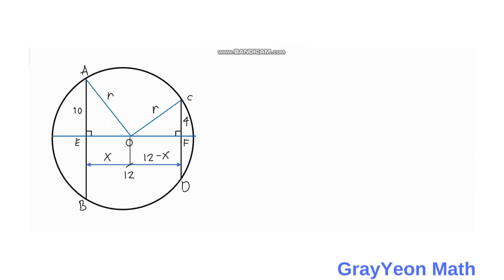The next thing that we have to focus on is triangle AOE. By using the Pythagorean theorem we have R squared as the hypotenuse equal to 10 squared plus X squared. If we simplify further we have R squared is equal to 100 plus X squared. That will be our equation 1.